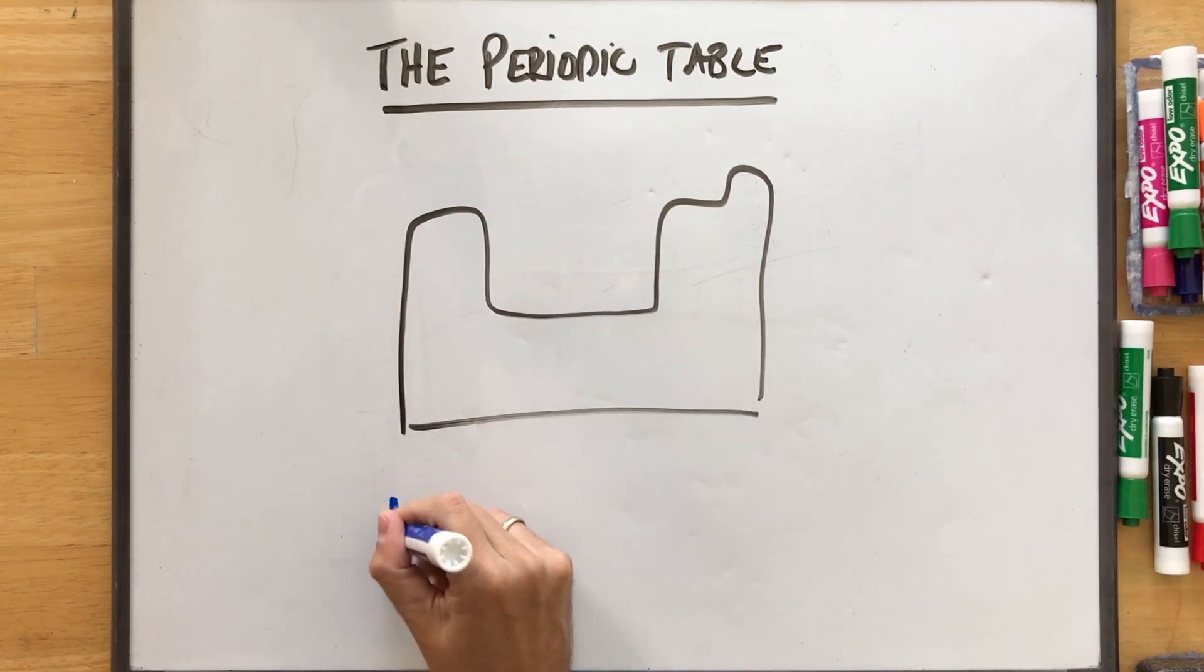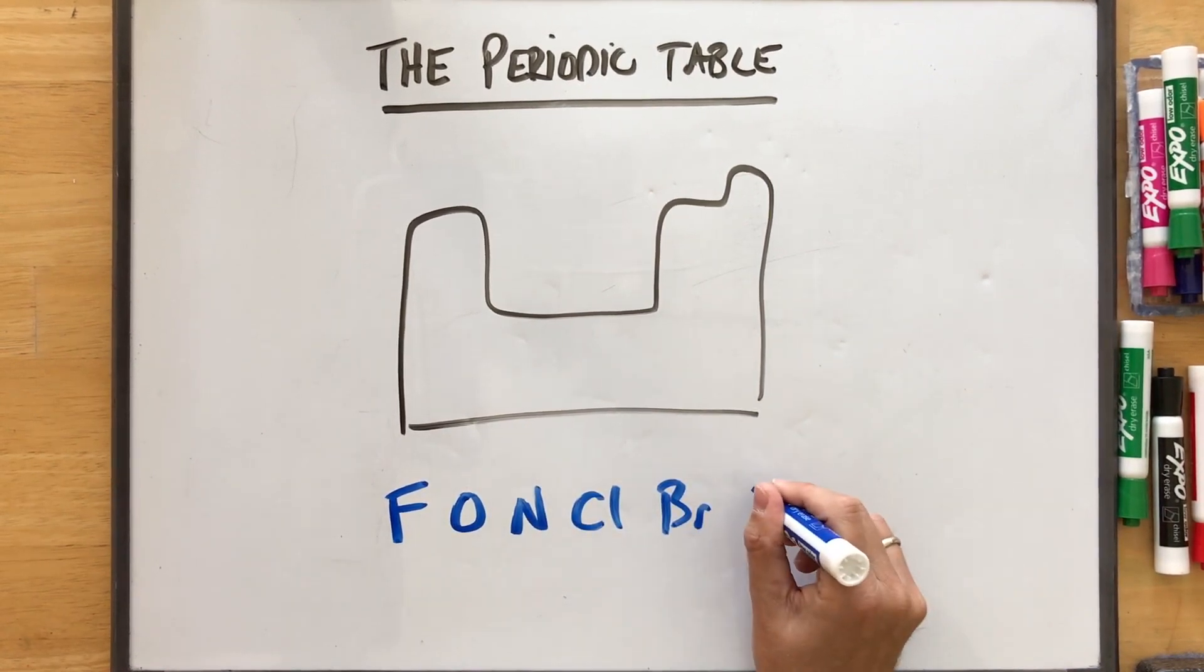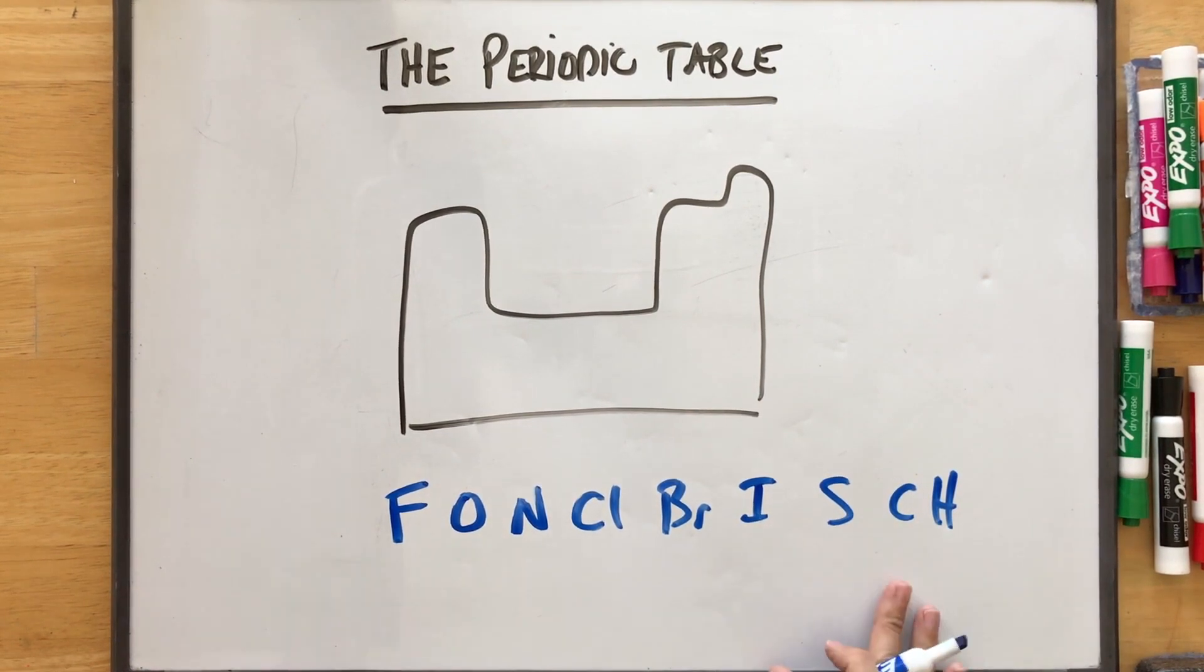In organic chemistry, this is about all you need to know. F-O-N-C-L-B-R-I-S-C-H. And if you want to pronounce that, that's Funkobrish, but obviously that's not really a word. But this is basically fluorine, oxygen, nitrogen, chlorine, bromine, iodine, sulfur, carbon, and hydrogen.